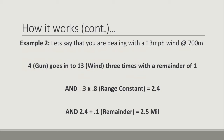In example two, we've got a 13 mile-per-hour wind at 700 meters. We've got our four gun, which goes into 13 three times with a remainder of one. Three multiplied by 0.8 — because that is our range constant for 700 meters — gives us 2.4. Then we've got the remainder: 2.4 plus 0.1 for our remainder equals 2.5 mils. With the remainder, it's initially a whole number — four goes into 12 three times with a remainder of one, and that one becomes a decimal for the purpose of the formula. It's very simple and quite quick once you understand how it works.